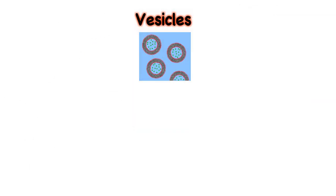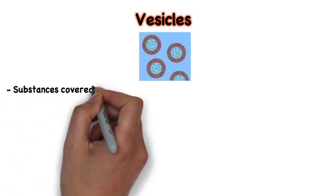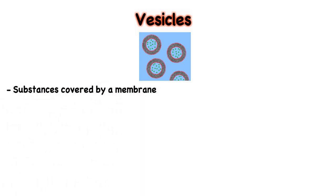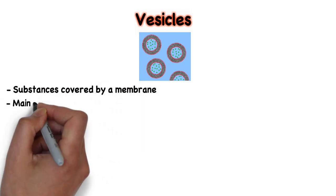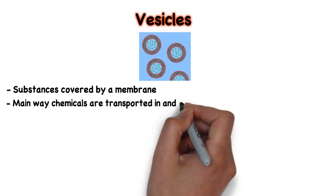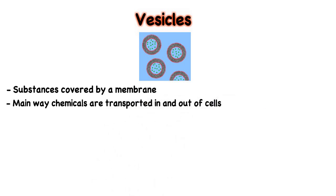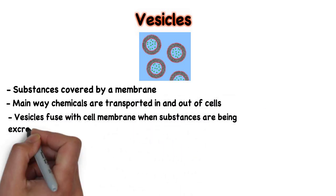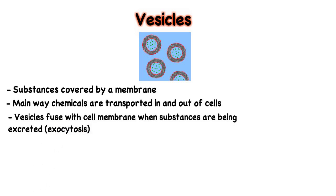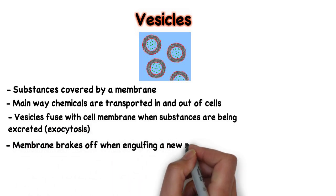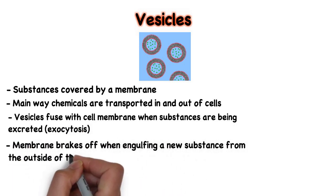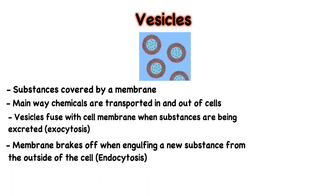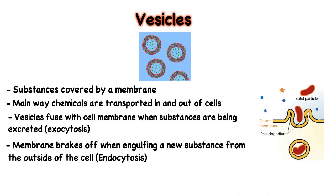Vesicles are formed when substances are covered by a membrane. This is the main way chemicals are transported into and out of the cell. When compounds are being secreted from the cell, the vesicle fuses with the cellular membrane, and when a substance is being engulfed by the cell, part of the membrane breaks off to surround the acquired chemical.